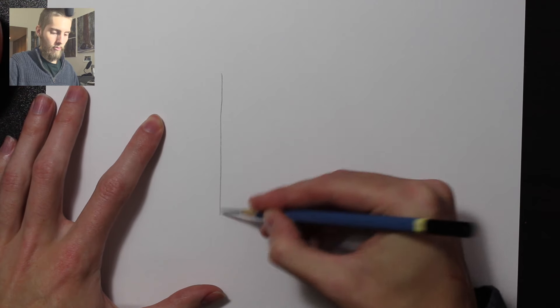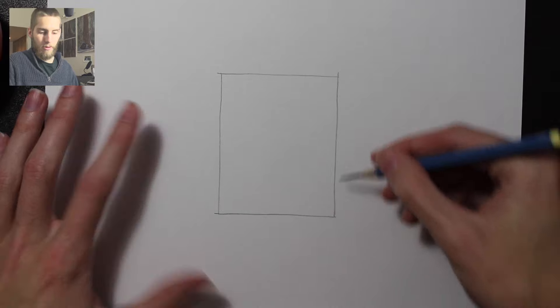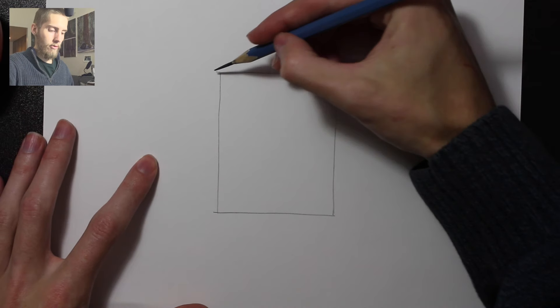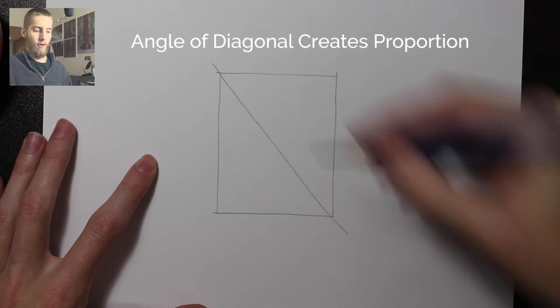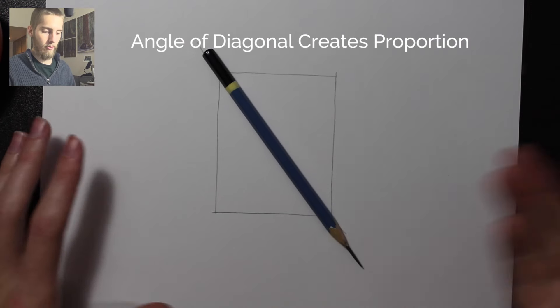So let's take a rectangle of any size. Top and bottom are the same width and the sides are the same height. Now this creates a diagonal. Every rectangle has one, every square has one. This diagonal creates a proportion.